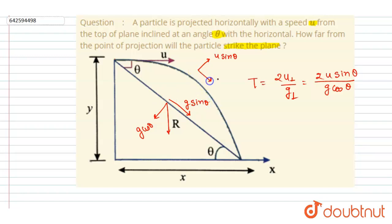And the along component is u cos theta, right? And let's suppose this direction as y dash and this is x dash.